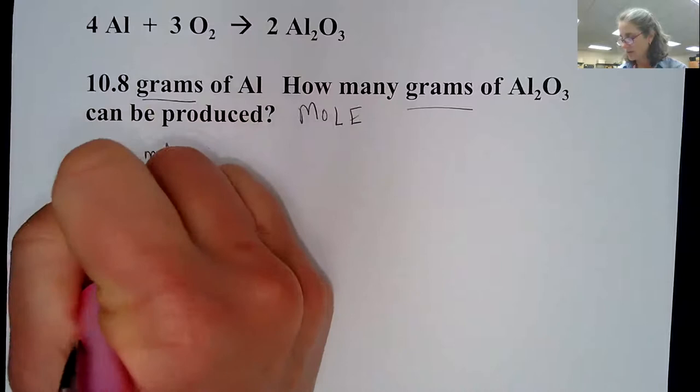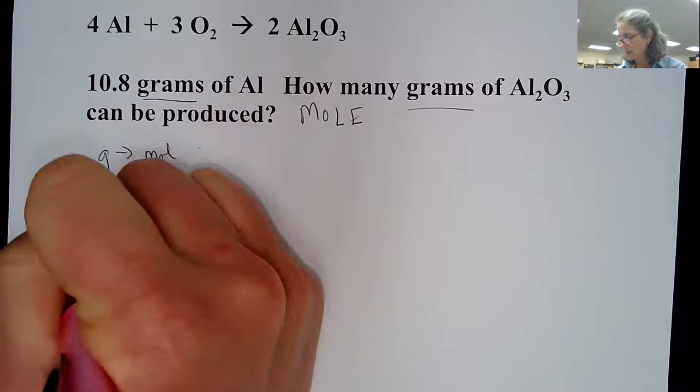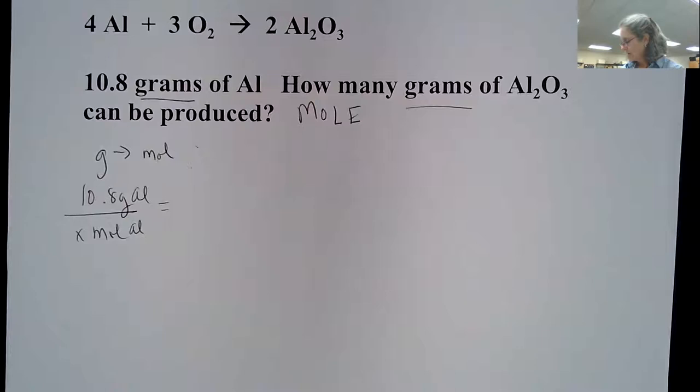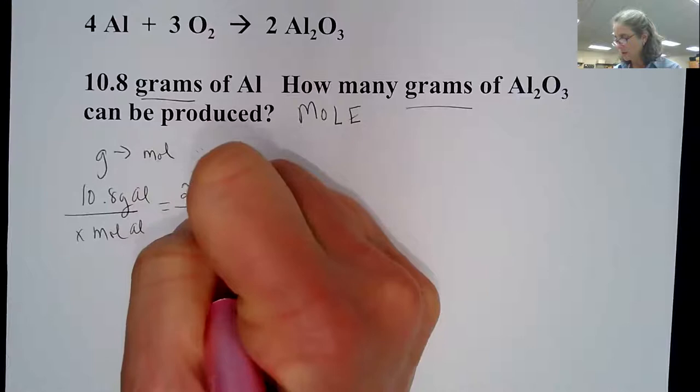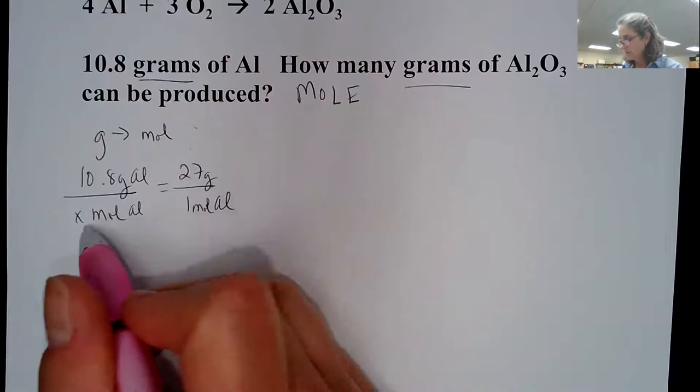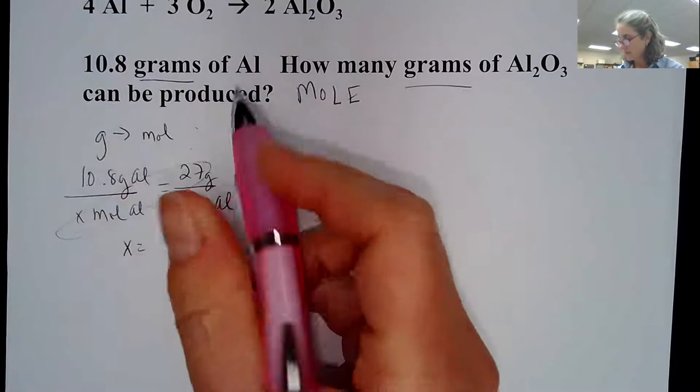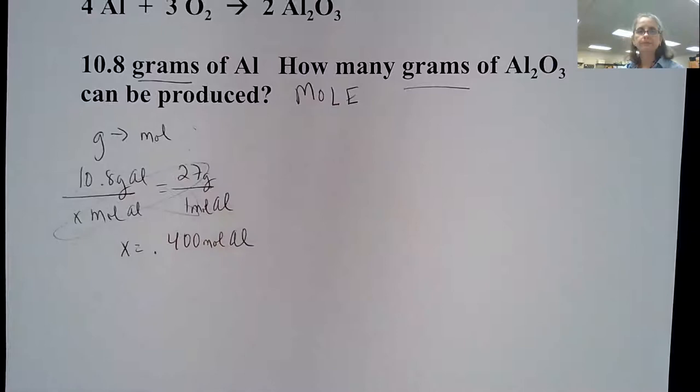So 10.8 grams of aluminum is how many moles of aluminum — that's my x. We look up the molar mass of aluminum, which is about 27 grams for every one mole of aluminum. Set up as a proportion and cross multiply. I take 10.8 divided by 27, and I get, with three sig figs, 0.400 moles of aluminum.